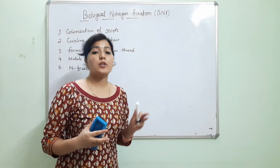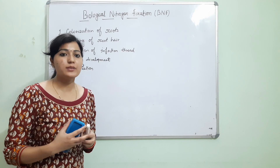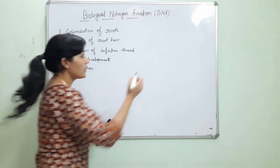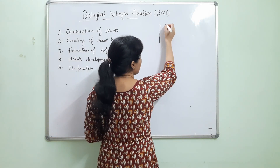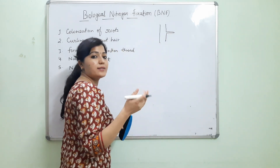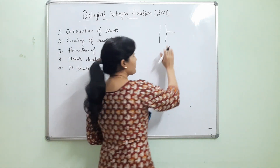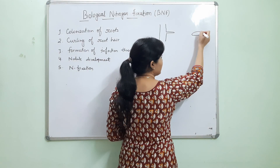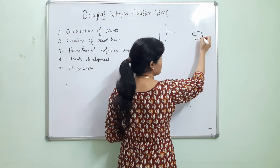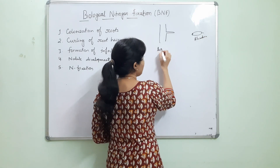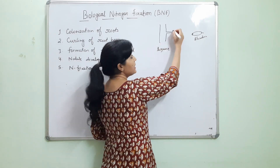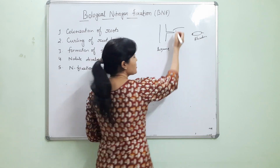The entire process of biological nitrogen fixation by legumes is completed in five steps. The first step is colonization of roots. Suppose this is a root of a leguminous plant with root hairs present on its surface, and here is the Rhizobium bacterium.